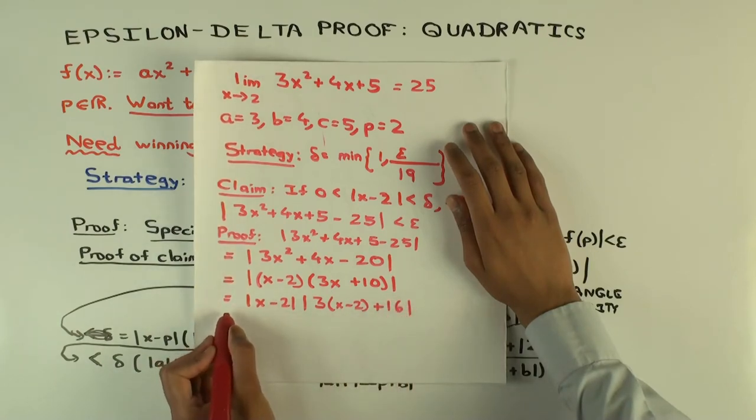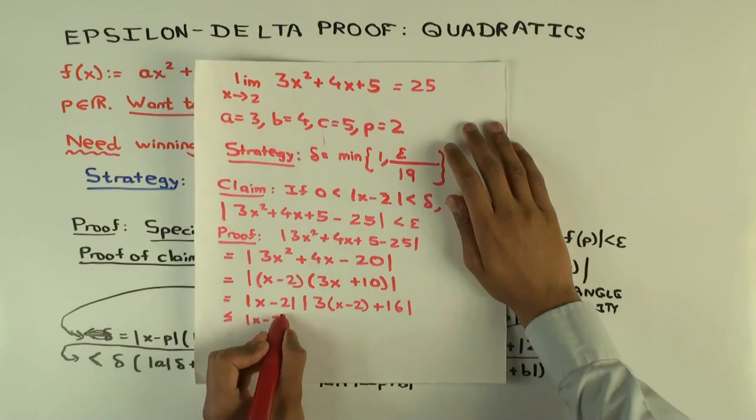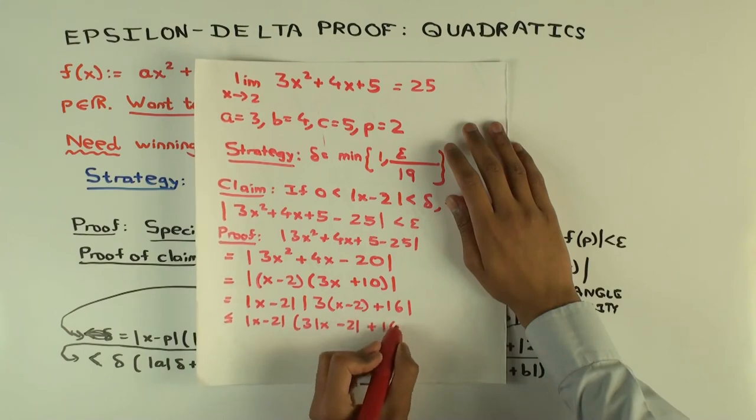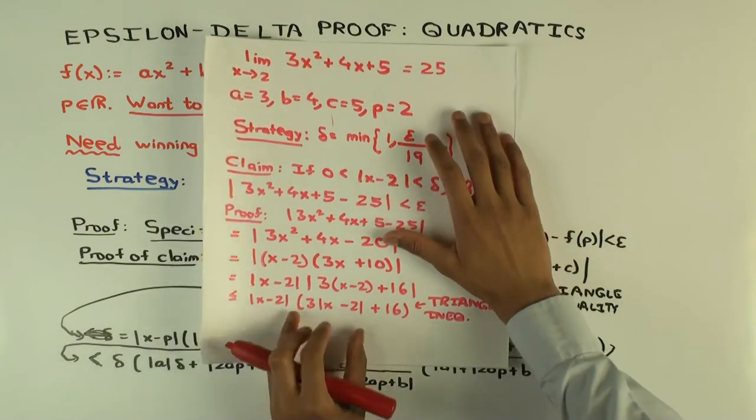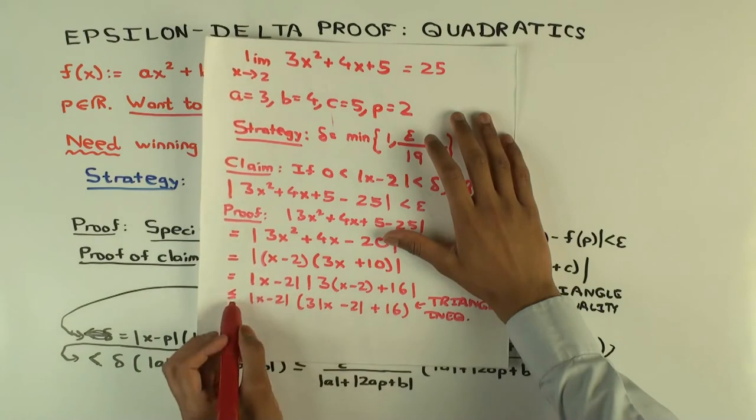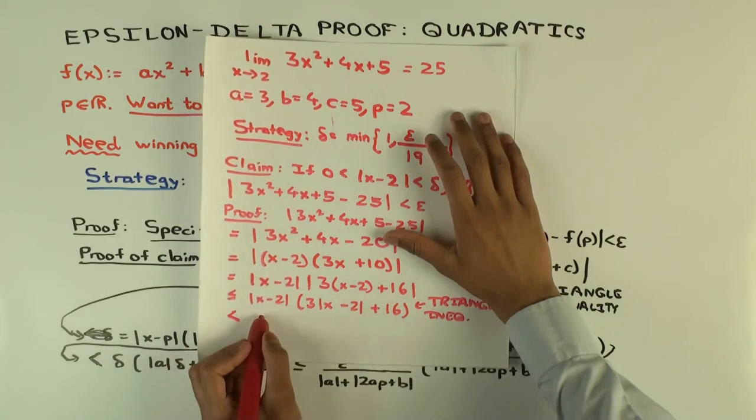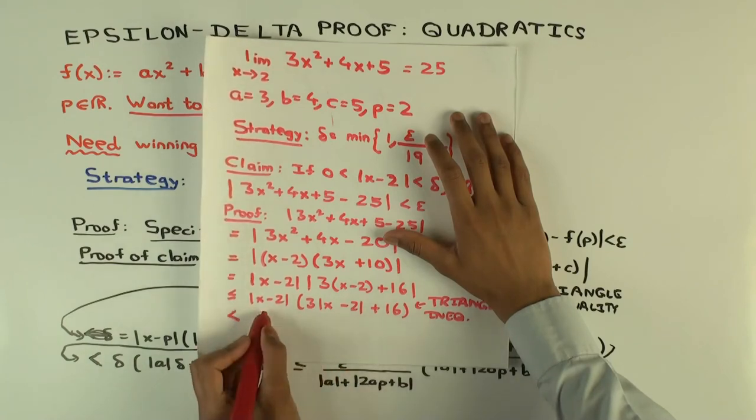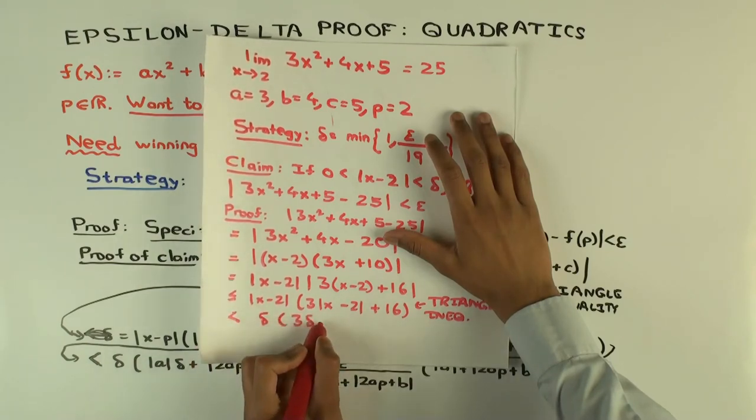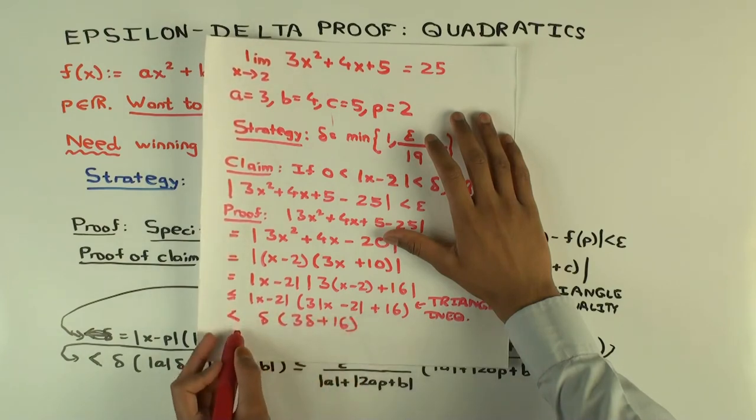Now use the triangle inequality. Both of these are positive numbers, so each one is less than delta. You get delta times 3 delta plus 16. And now what do you do? Delta is less than epsilon over 19, the other one is less than 1.